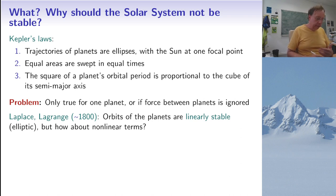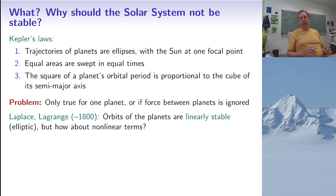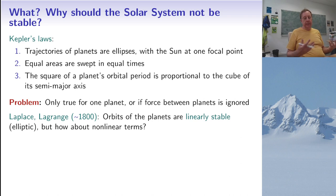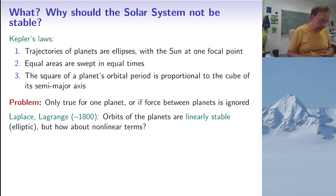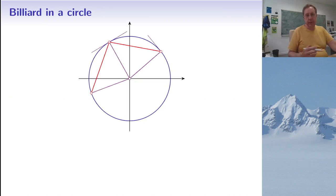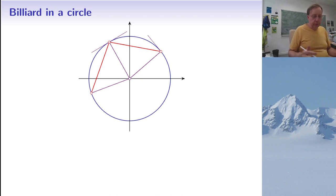To explain what mathematicians did to analyze this problem, I will resort to much simpler systems, because the solar system with eight planets and the sun has over 40 variables for position and momentum, even accounting for conservation of angular momentum and energy. So we are going to look at much simpler systems, one example being billiards. Let me look at the billiard in a circle; I have drawn a trajectory in red.